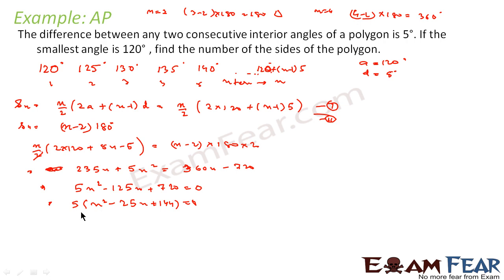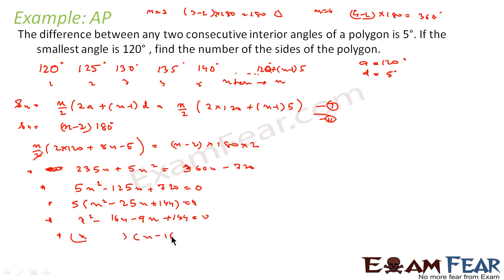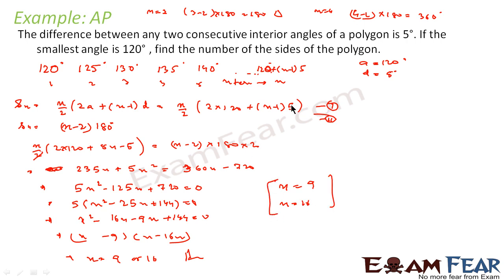We factorize n² minus 25n plus 144 equals 0. We need two numbers whose product is 144 and sum is 25: that is 16 and 9. So we write (n − 16)(n − 9) equals 0, giving n equals 9 or n equals 16. Both values are valid — in either case the conditions hold: consecutive angles differ by 5 degrees and the smallest angle is 120 degrees.